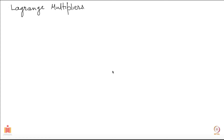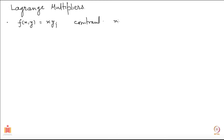In the last video, I was talking about the method of Lagrange multipliers, and in this video I want to give you an example of it. Let us say I am given a function f of two variables x and y, and the function is x times y. I want to also impose a constraint on the values that x and y can take — the domain is that of a unit circle, so x squared plus y squared equals 1, or equivalently x squared plus y squared minus 1 equals 0.